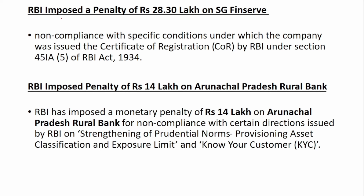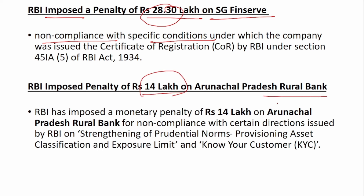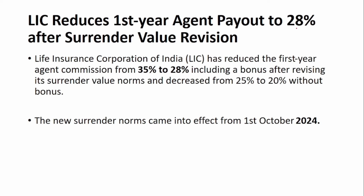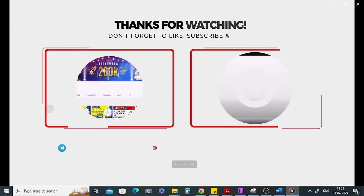Regarding few penalties imposed by RBI: RBI imposed a penalty of Rs. 28.3 lakh on SG Finserv due to non-compliance with specific conditions under which the company was issued. Similarly, a penalty of Rs. 14 lakh was imposed on Arunachal Pradesh Rural Bank related to KYC and prudential norms — provisioning, asset classification, and exposure limits. Next: LIC has reduced the first-year agent commission from 35% to 28% including a bonus, and from 25% to 20% when bonus is not included. These surrender norms come into effect from October 1, 2024.